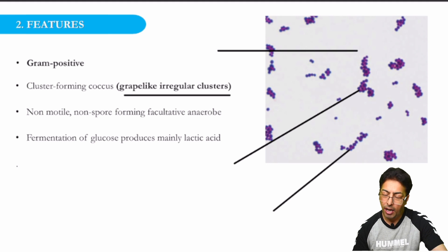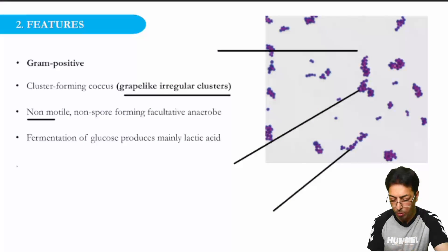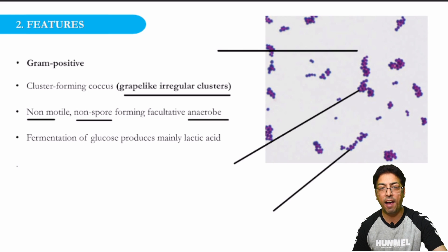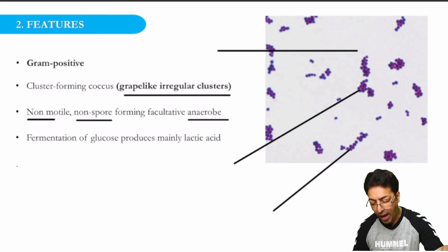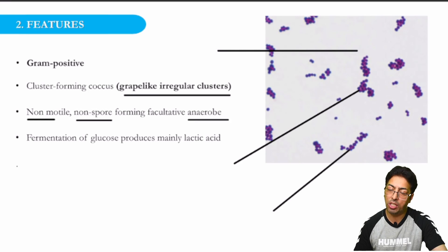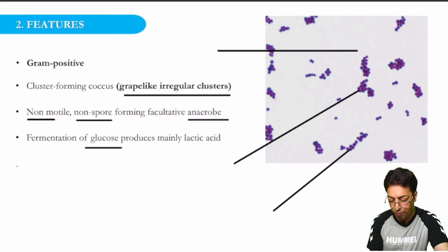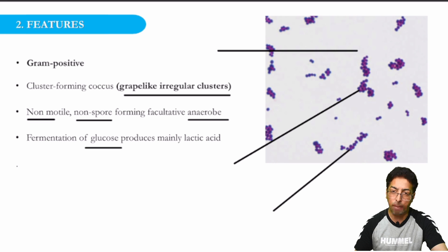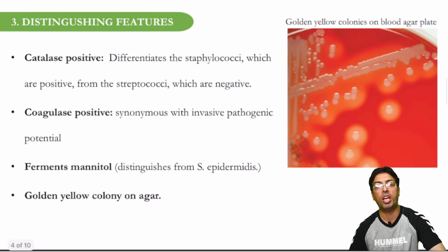Other important characteristics include motility and spore formation. You have to remember that Staph aureus is non-motile, non-sporing, and anaerobic. Staff is characterized by being non-motile, non-sporing, and anaerobic. In addition, as far as fermentation is concerned, Staph aureus ferments glucose into lactic acid — very important. So: gram positive, non-motile, non-sporing, and anaerobic — these are the important characteristics to remember.